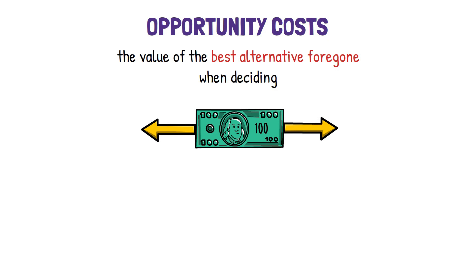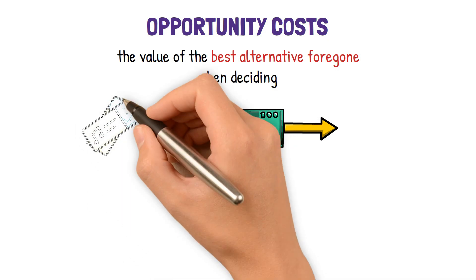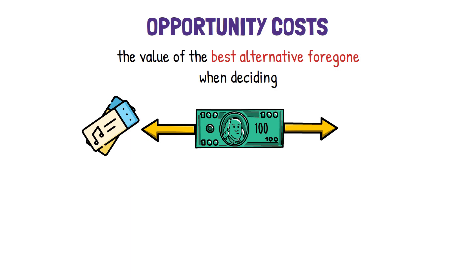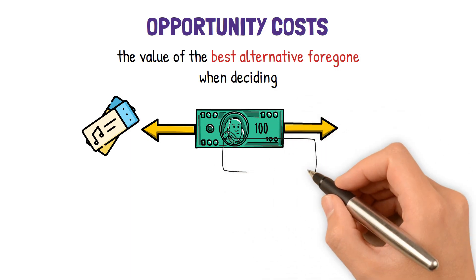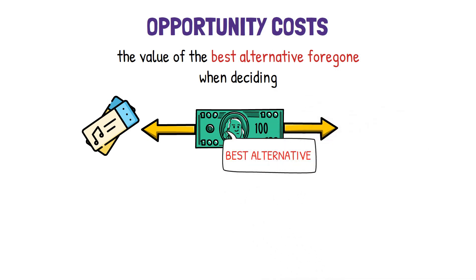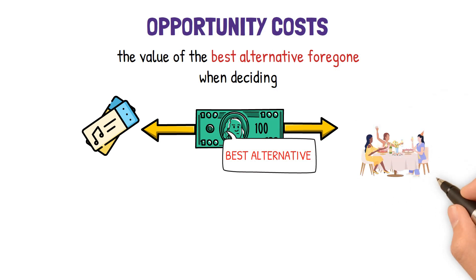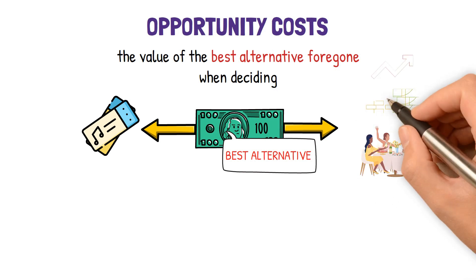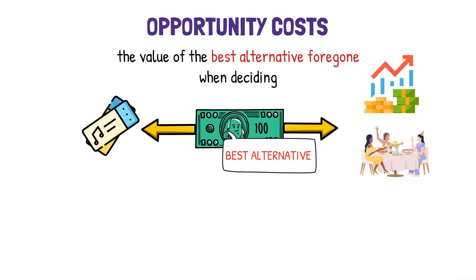For instance, if you have $100 and decide to spend it on a concert ticket, your opportunity cost is the value of the next best alternative use of that $100, such as spending it on a night out with friends or investing it in stocks.